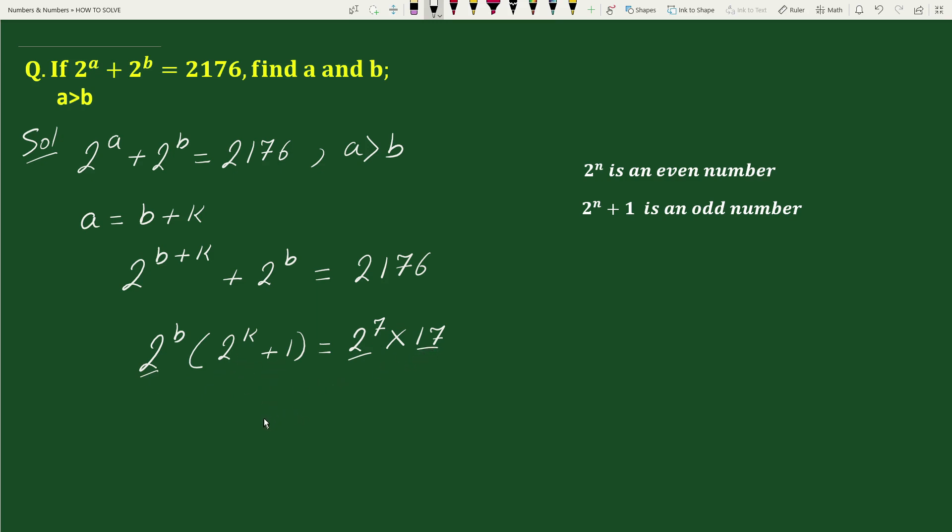So now we can write 2 to the power b equals to 2 to the power 7 and 2 to the power k plus 1 equals to 17.